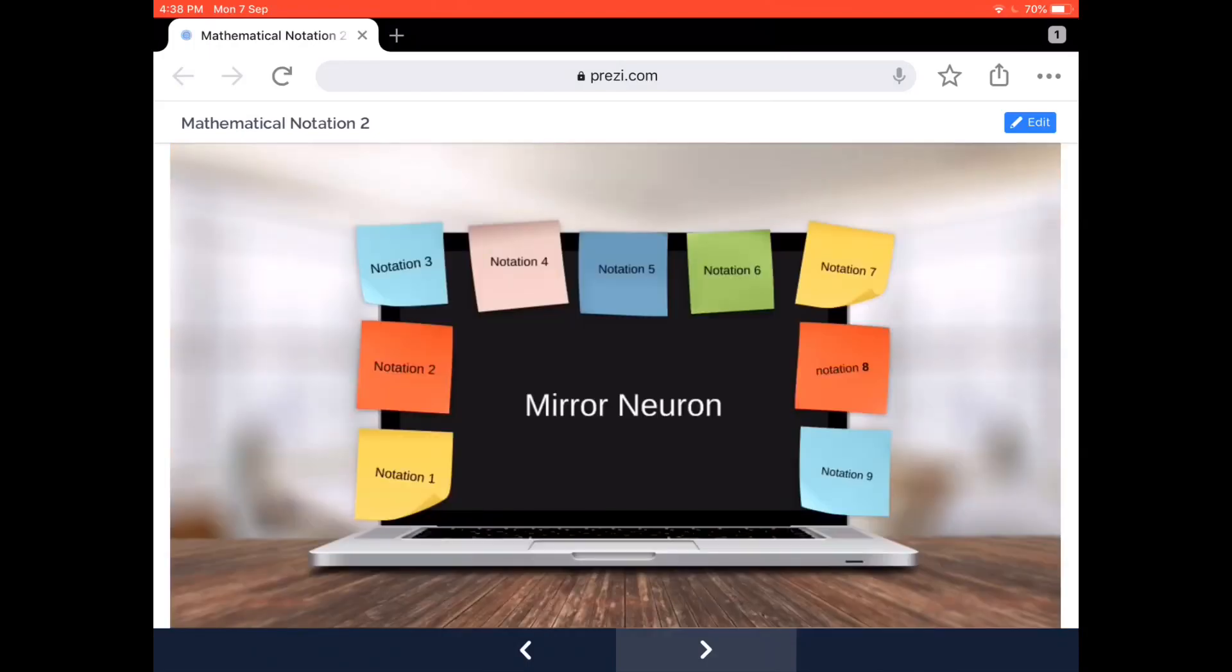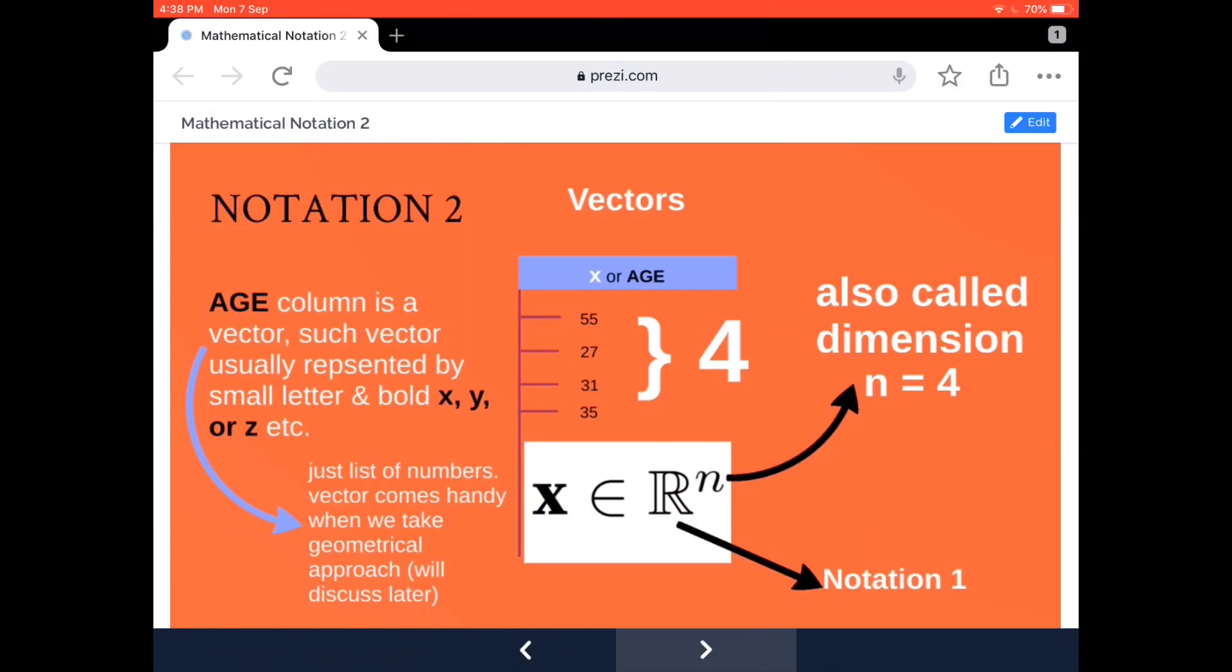So today's notation is based on that. The concept is vectors and matrices. We already know what vectors are. For example, if I want to represent an age field, I'm going to describe it